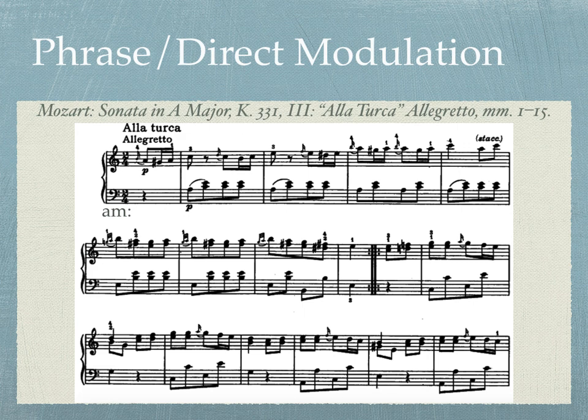Phrase modulation or direct modulation occurs when the music suddenly changes key with no connecting factor present. We call this a phrase modulation because it often occurs at the beginning of a new phrase or formal division in a piece. Listen to an example of a phrase modulation from Mozart's Sonata in A Major, Third Movement, which begins in the key of A minor.